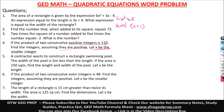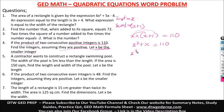So our first integer is x and our second is x + 1. The product of these two equals 110: x(x + 1) = 110. Distributing: x² + x = 110. Taking 110 to the left: x² + x - 110 = 0. The coefficient of x² is 1, so 1 × (-110) = -110. We need factors of 110 that add or subtract to give 1 and multiply to give -110.